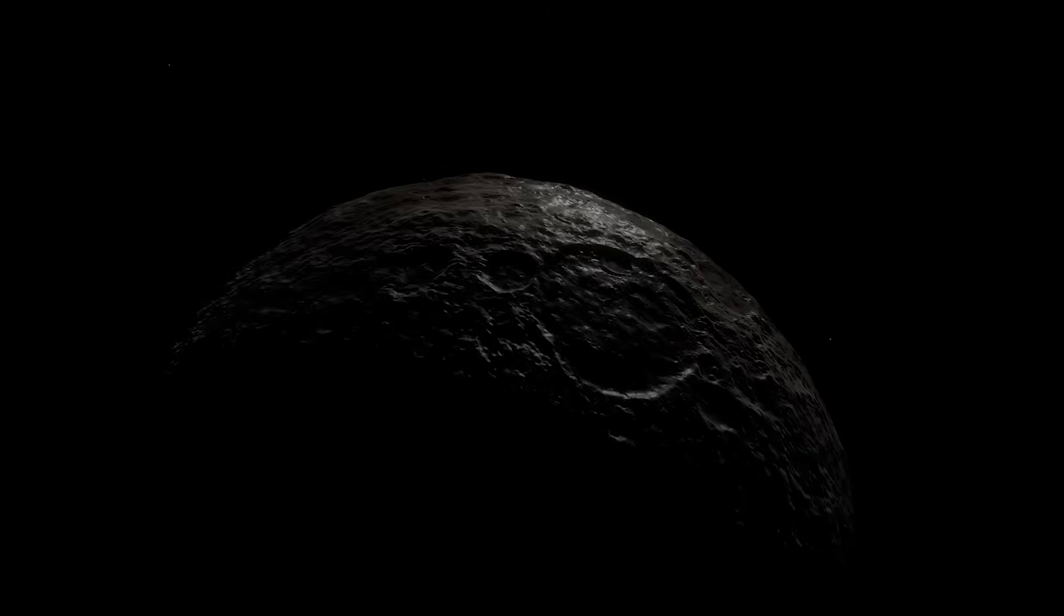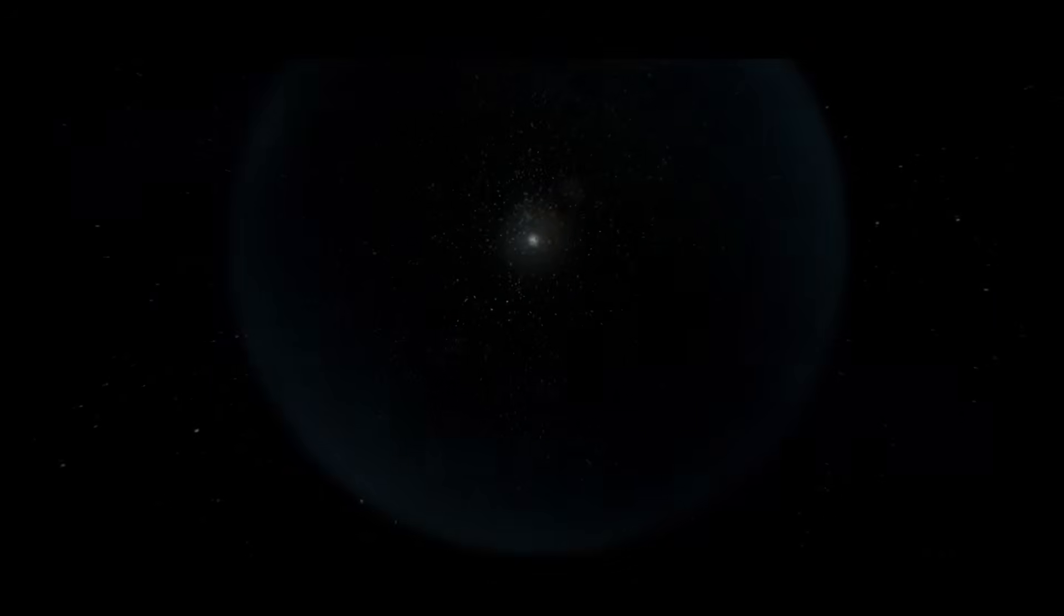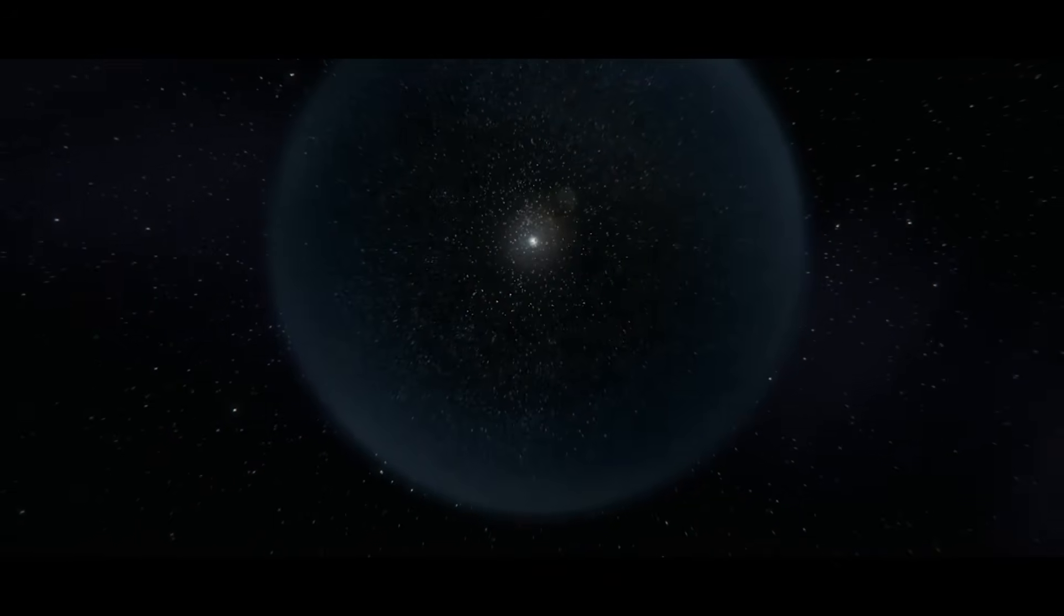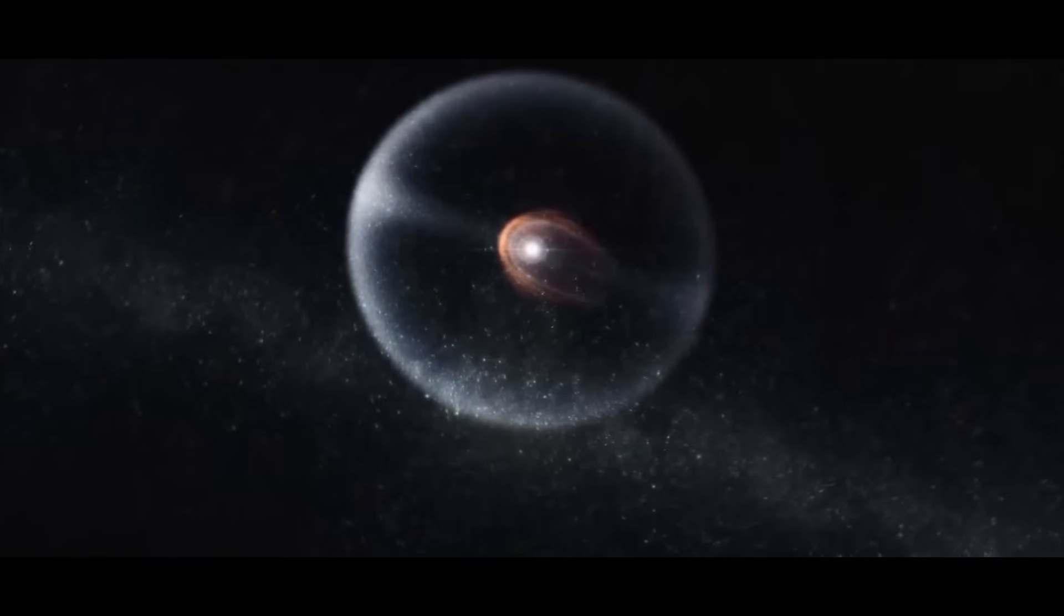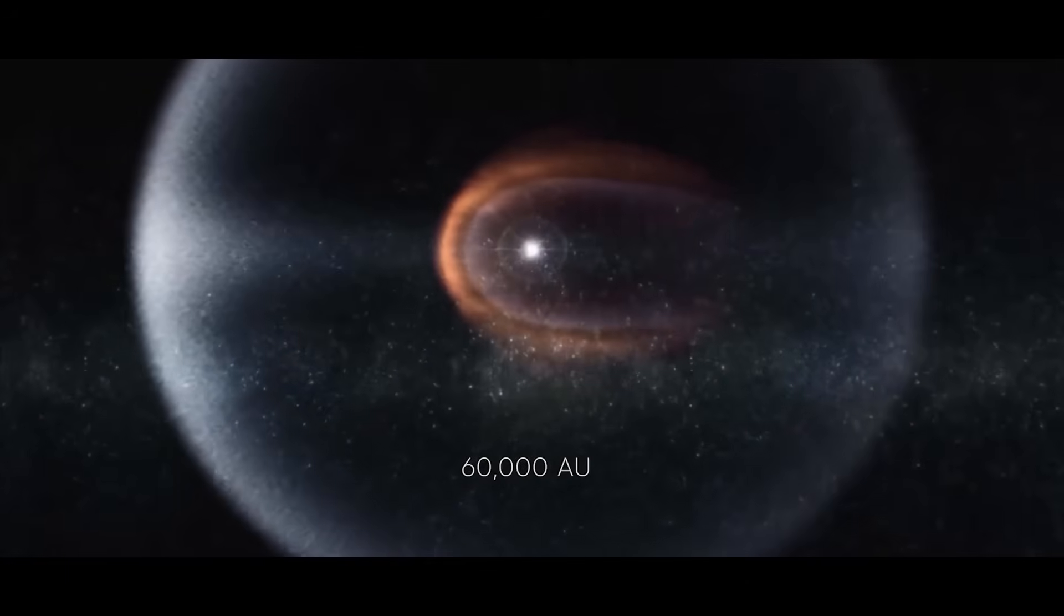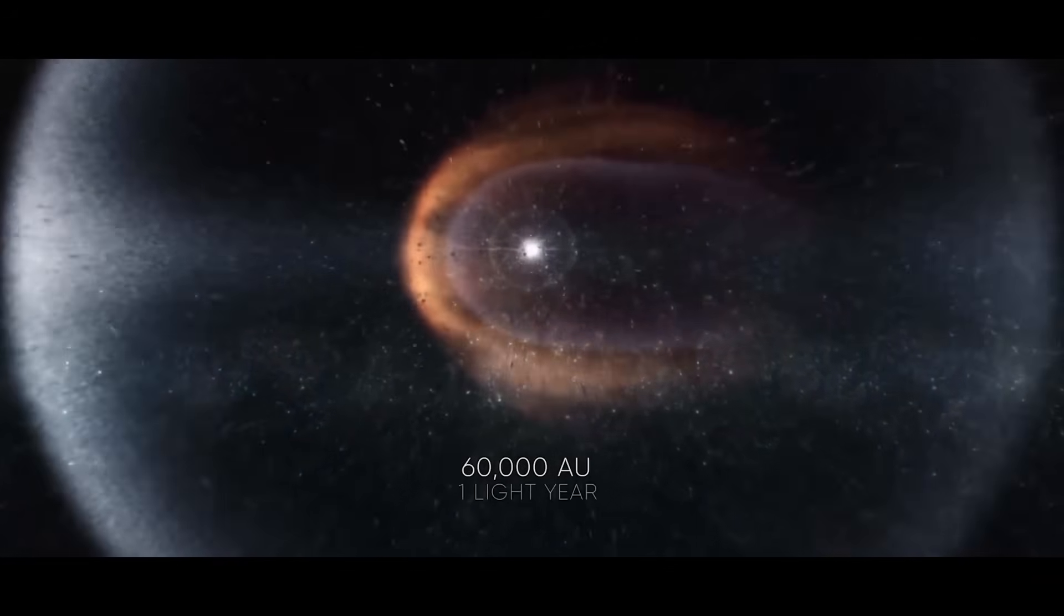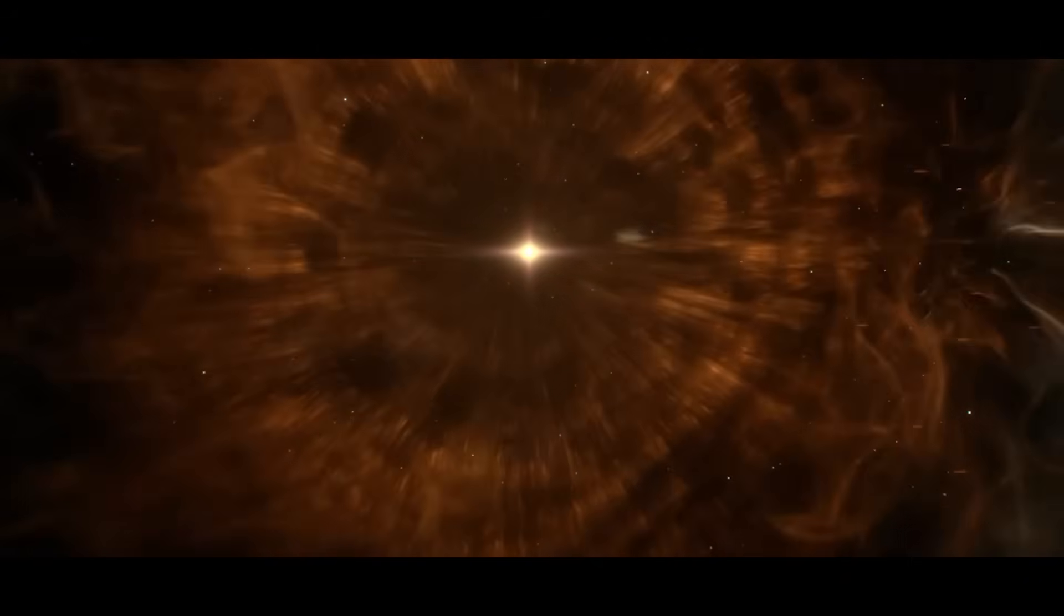The most distant object discovered in our solar system to date is called Far Out, located 132 astronomical units, or 18 light hours, away from the sun. Even this object is still far from the hypothetical Oort cloud, whose inner boundaries are estimated to be around 2,000 astronomical units from the center of our solar system. Some estimates suggest that the outer boundaries extend up to 60,000 astronomical units, about one light year. These limits are defined by the sun's gravitational pull, and beyond that lies interstellar space.